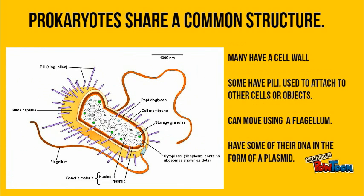Many will have a cell wall and short, hair-like structures called pili, which are used to attach to other cells or objects. They can also have a tail-like extension called a flagellum, which helps prokaryotes move by rotating like a propeller on a boat. Some also have small circular structures called plasmids, which contain some of the organism's DNA.